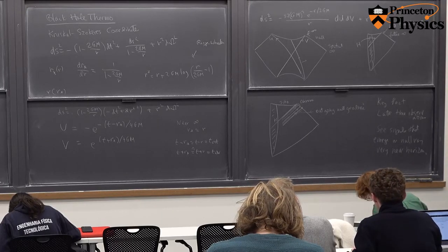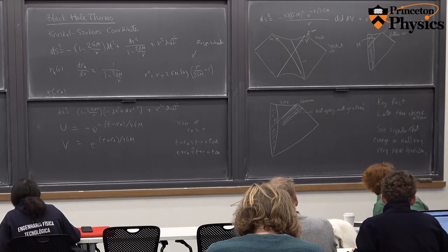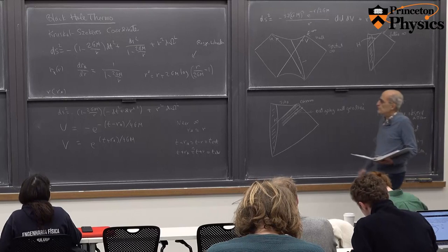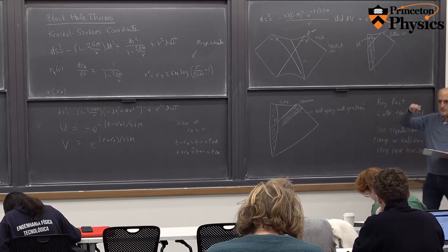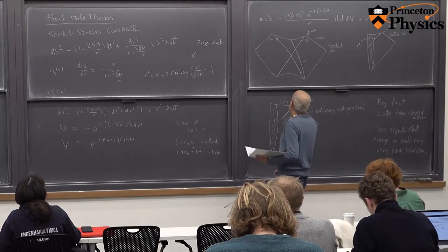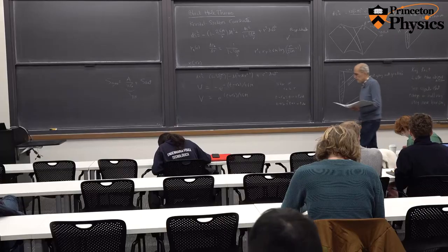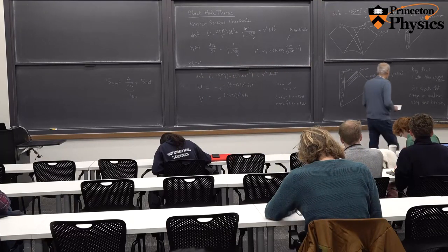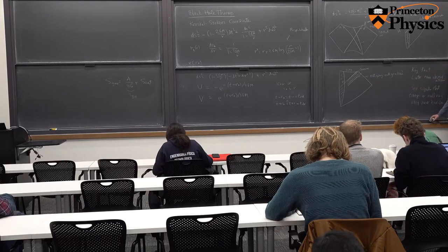How near the horizon did a signal originate if you observe it at a time t? We could answer that by solving the geodesic equation in the original metric. But as a shortcut, since we've deduced the Kruskal-Szekeres form of the metric, we observe that in that form the radial null geodesics are just lines of constant U or V.